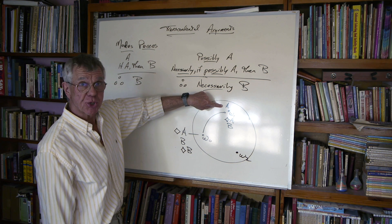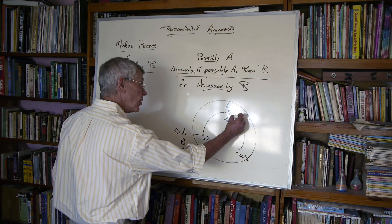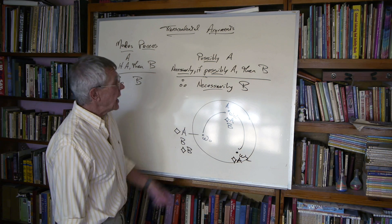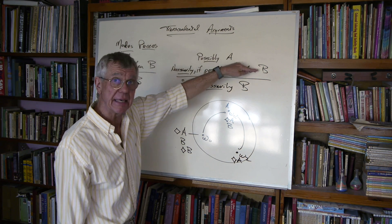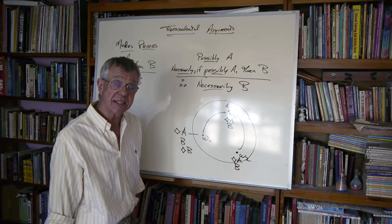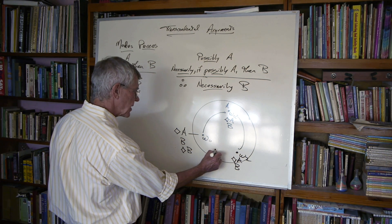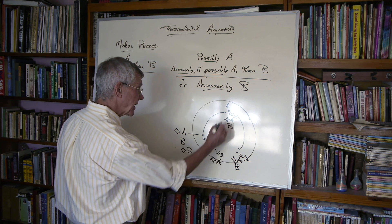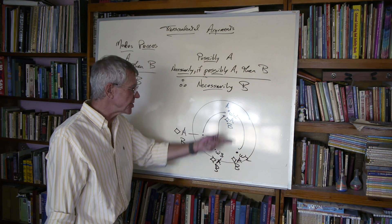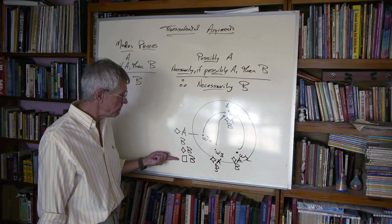But we want to know whether B is true in every single world, not just some possible world. To establish that, I need to show B is true in any arbitrarily selected world. Take W2 — some arbitrary world. Why would B be true there? A is true in W1, which is one of these possibilities, so from the point of view of W2, possibly A is true, because here's a situation — W1 — where A would hold. Since it's a necessary truth that if possibly A then B, B has to hold in W2. B is true here, B is true there, B is true in this arbitrarily selected world.